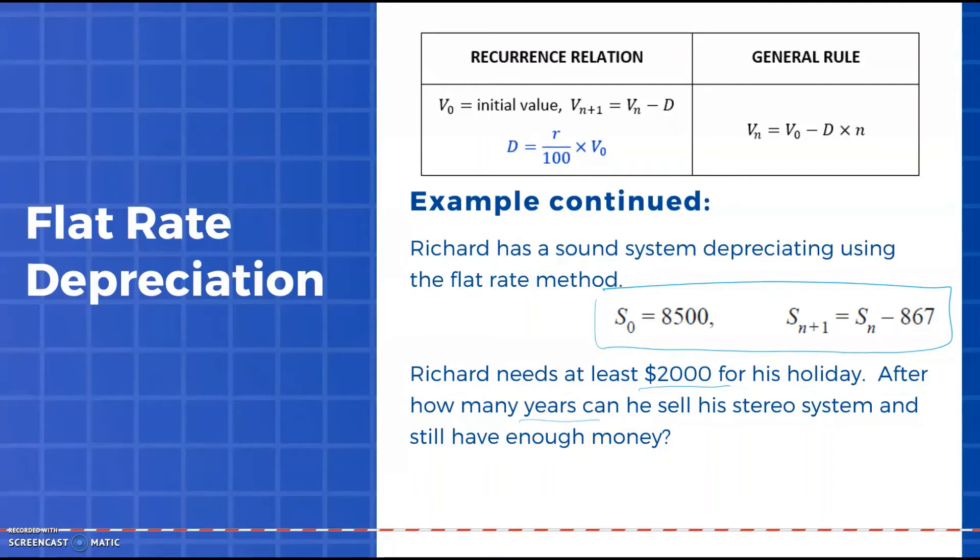First we set up our general rule: Vₙ = 8500 - 867n. In this case because we want to know how many years, we're going to solve for n. We set up our equation as 2000 = 8500 - 867n. When we solve for n we get 7.497. If I sold after seven years it's going to be worth more than two thousand dollars. If I sold after eight years it would be worth less than two thousand, worth $1,564. So in that case I want to say that the latest I can sell is after seven years.